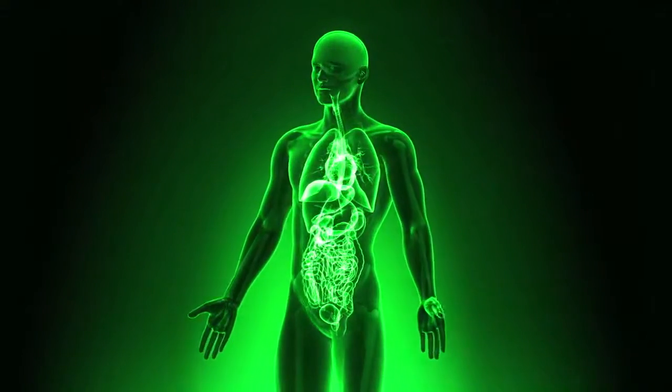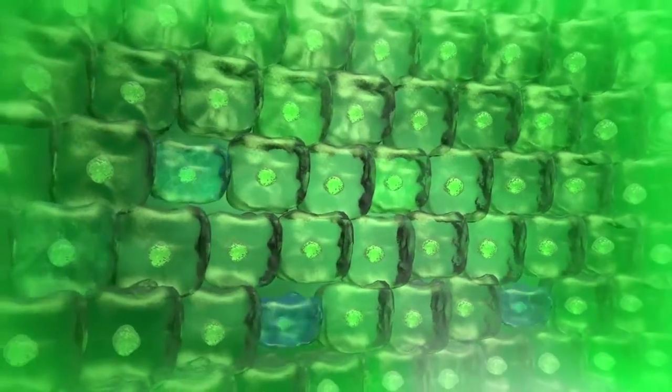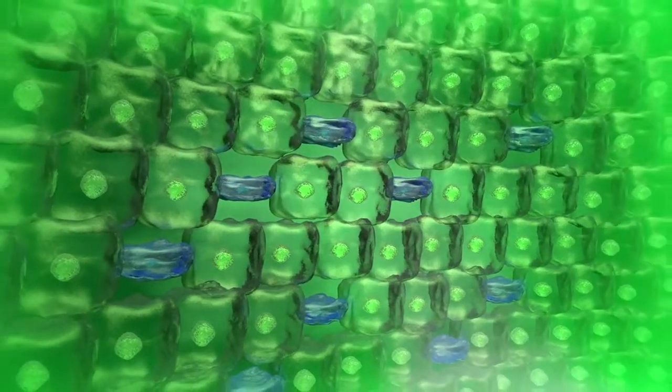Our bodies are made up entirely of cells. Like a brick wall that crumbles if its structure wears away, our organs and tissues start to fail and age as our cells wear down.